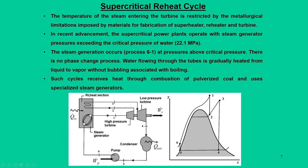This is all about the reheat cycle. There is another concept called supercritical reheat cycles. For every working fluid, the thermodynamic diagrams such as PV and TS diagrams show various states. In the TS diagram for steam, we have liquid regions, liquid-plus-vapor regions, and vapor regions. In the normal reheat cycle, we do not go beyond the saturated dome — the system states remain within the liquid-vapor region along a constant pressure line.